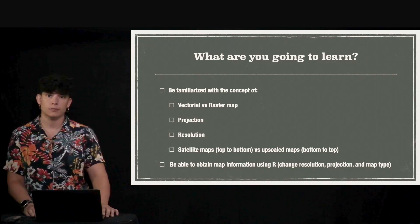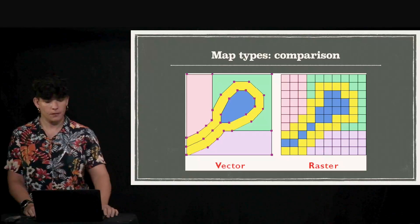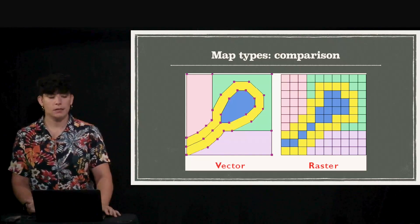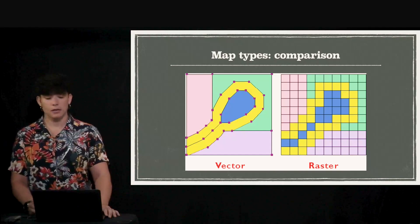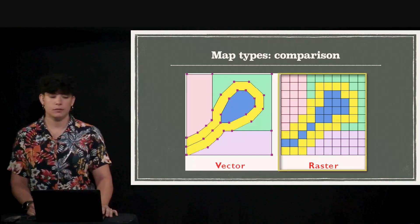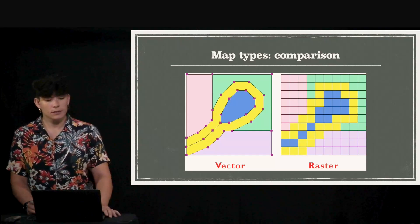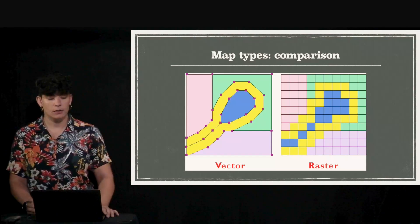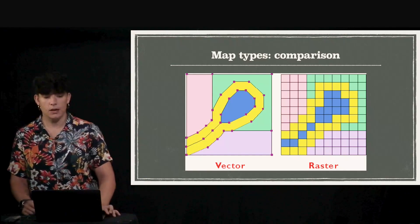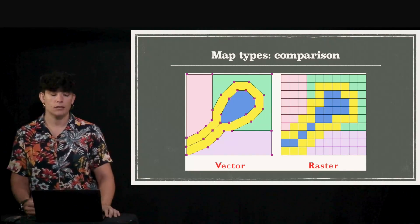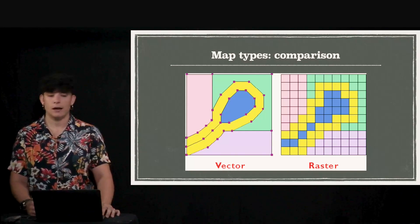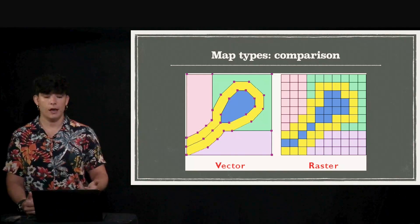Here we have the same image represented in the two different map types. The first one is represented using a vector map and the second one is represented using raster. The main difference is that in vector maps we can have irregular polygons, but in raster maps we have a grid where all the cells are equally distributed, they have the same size and they are in the same disposition.